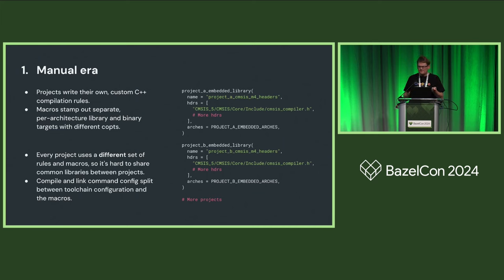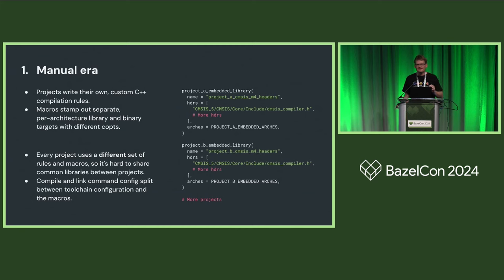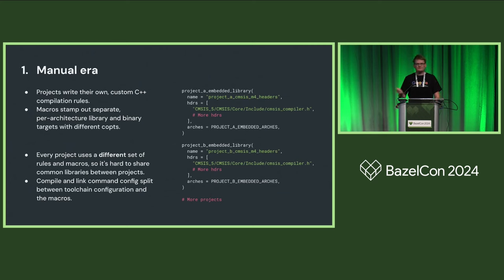For example, an actual build file from the manual era: project A comes along and writes build files for CMSIS using their own custom rule — project A embedded library, with project A embedded architectures. Then project B adds another library target with their own custom rules for their custom targets. Another problem, hidden under the surface, is that compiler configuration is split between two places: the actual toolchain configuration, and the implementation of custom rules which might also add compiler configuration features.